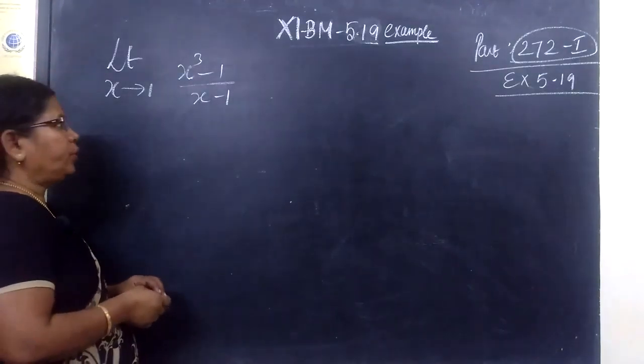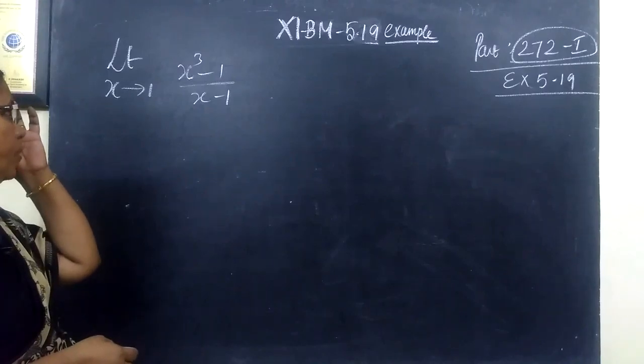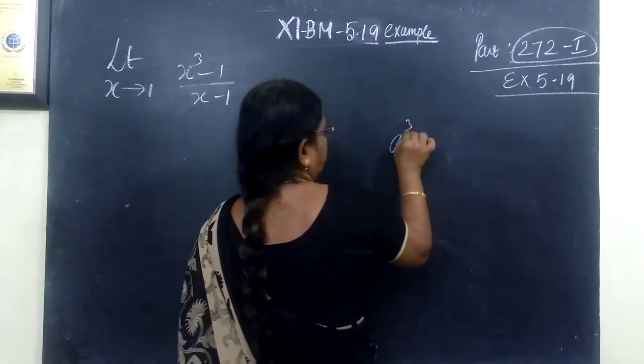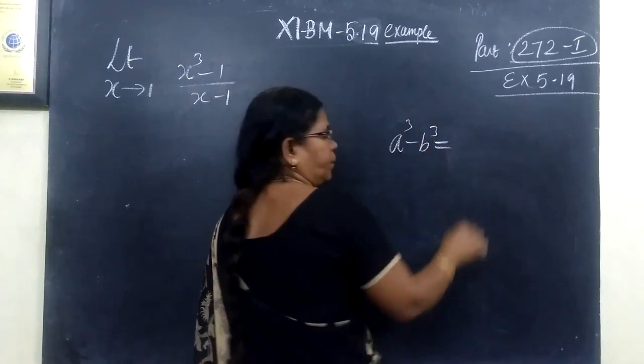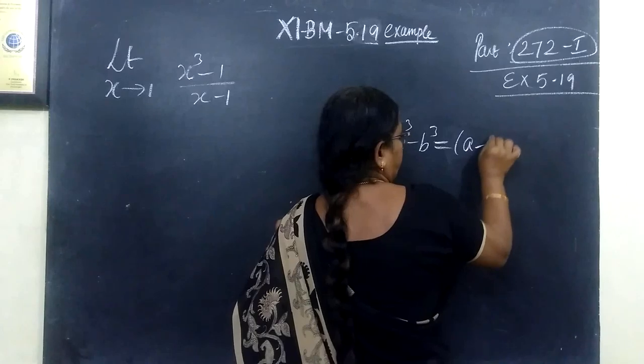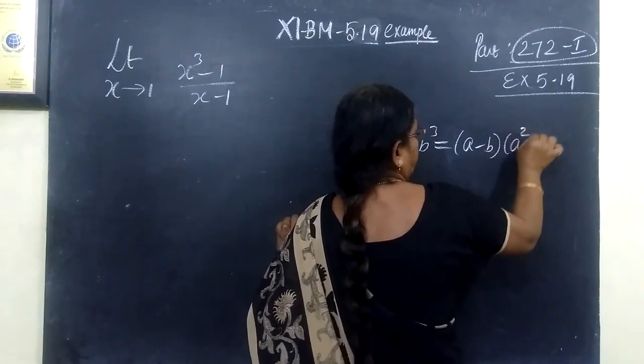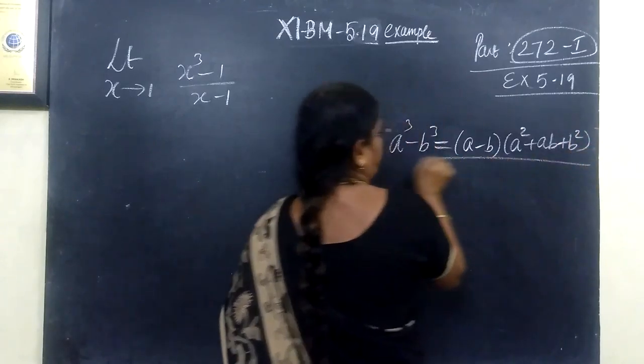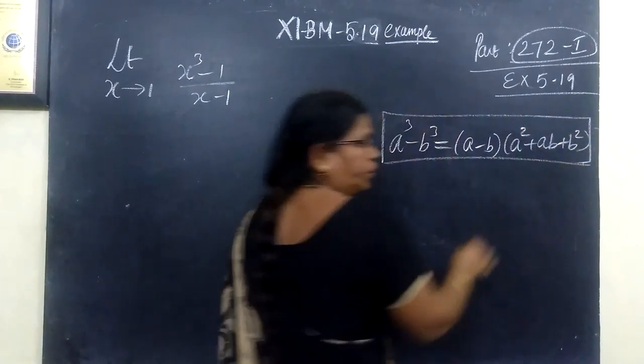Next one, example 5.19. Limit x tends to 1, x cube minus 1 by x minus 1. So in the numerator, you can use the formula a cube minus b cube. What is a cube minus b cube? a minus b, then a square plus ab plus b square.